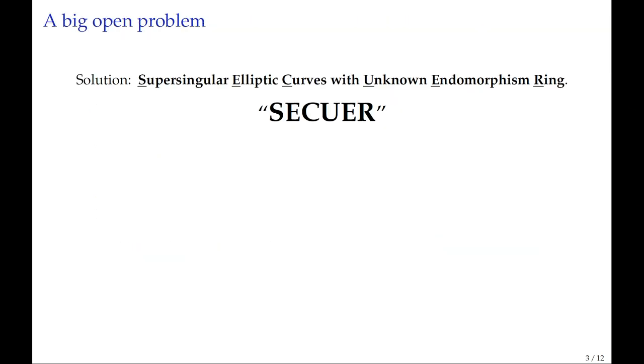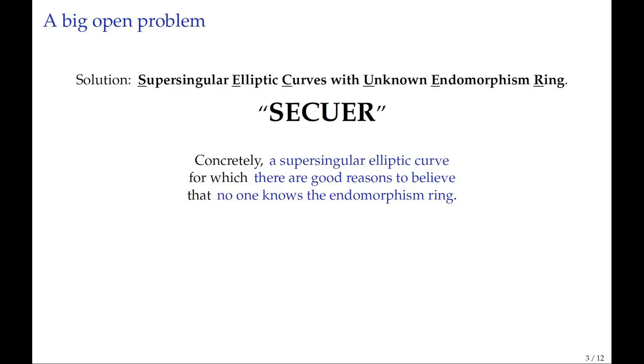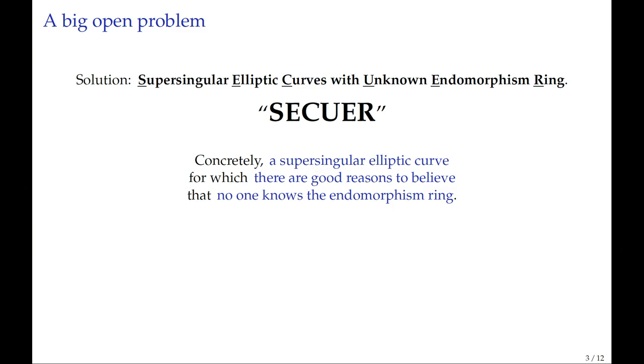If you have another one of these curves with this extra structure, that actually allows you to solve the isogeny problem, which is to find a connection between these two curves in polynomial time, assuming the Riemann hypothesis. In some cases, this extra information can be used to backdoor isogeny-based protocols, and that's why it's a topic that we very much have to worry about.